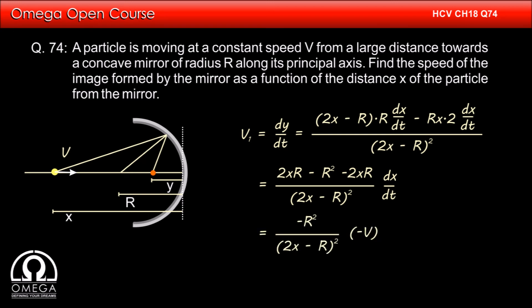Putting the value of dx by dt, we get vi is equal to minus r square by 2x minus r whole square into minus capital V. Or vi is equal to r square capital V divided by 2x minus r whole square. This is our answer.